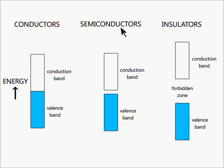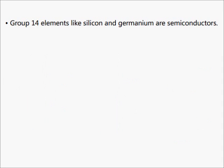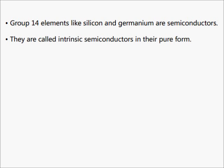In semiconductors, this energy gap is quite narrow and electrons could easily jump to the conduction band at elevated temperatures. Group 14 elements like silicon and germanium are semiconductors. They are called intrinsic semiconductors in their pure form.